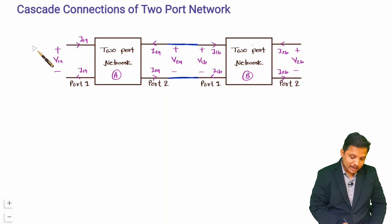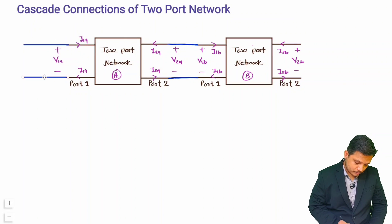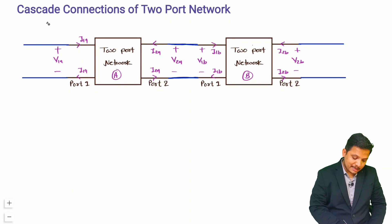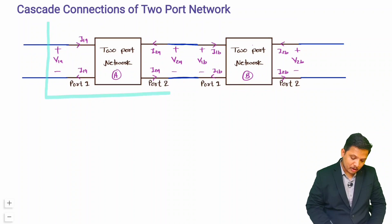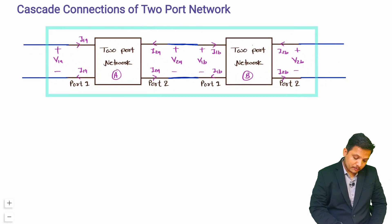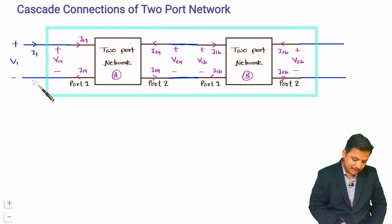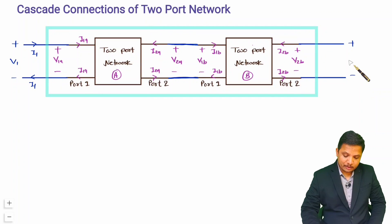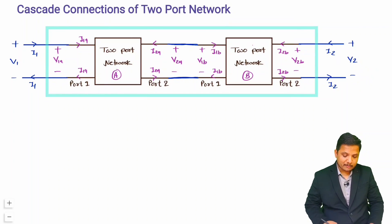I just need to extend this line a little bit. Now you can see the cascaded connection, and I'll be considering the equivalent two-port network of this cascaded connection. At port 1: voltage is V1, current going inside is I1 and current coming out is I1. At port 2: voltage is V2, current going inside is I2 and current coming out is I2.